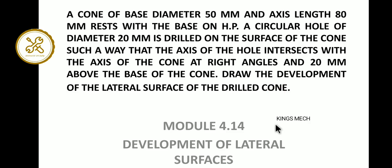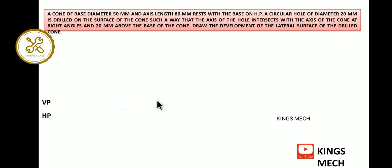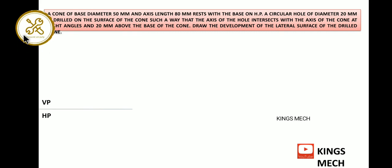So this is the question we are going to see how the problem works. Regarding the problem, we have cone data. In the data, VP and HP are ready, so after that we have to go for a circle. The circle is named A, B, C, D, E, F, G, and H.